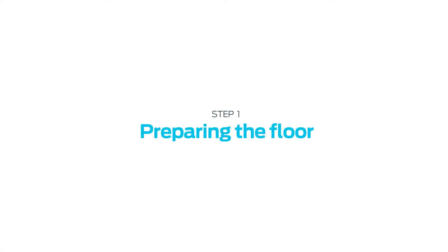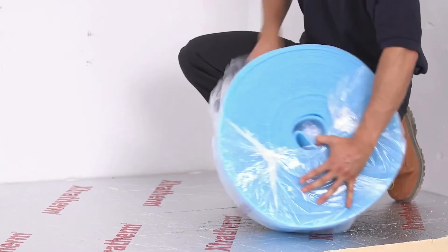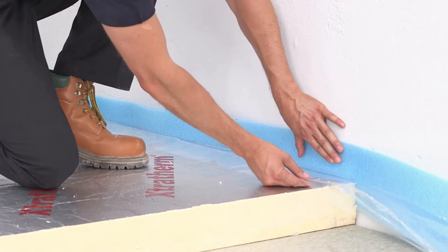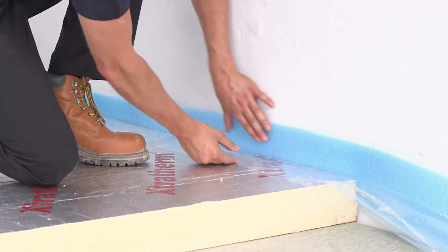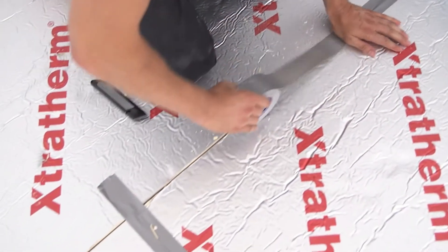Preparing the Floor. An expansion strip is required to accommodate expansion that occurs within the screed as a result of it heating up. This strip should be fitted around the room's perimeter and taped to the membrane. The joints must then be securely taped over.